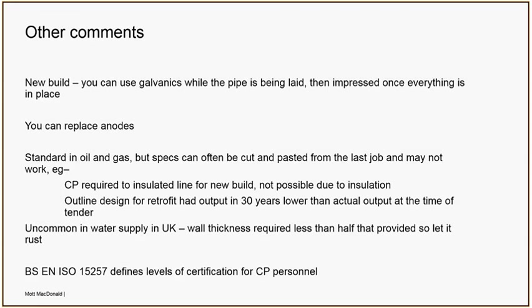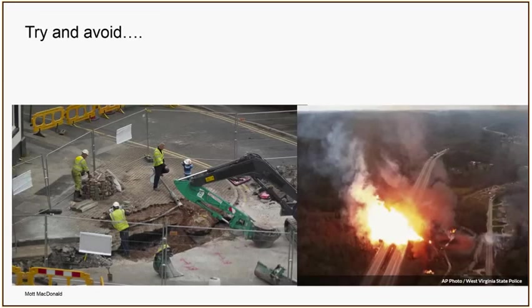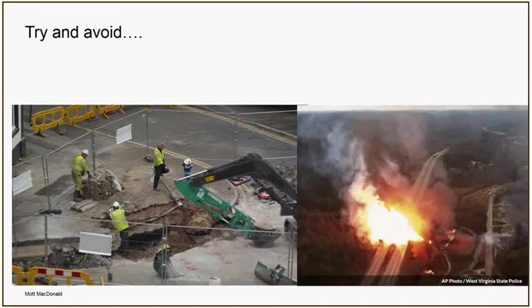That certification scheme is in place so you know that whoever's designing the system has the right qualifications and whoever's installing it has the right qualifications. What you're trying to avoid is the picture on the left — a common problem near where I work — where leaky pipes wash the ground away under the roads and occasionally big holes appear. On the right-hand side are the consequences of a failed oil and gas pipe: the two lines running through the picture are actually a three-lane highway. It's slightly more dramatic than a hole in the ground, but it can still be managed by simply stopping things from rusting. Thank you all for listening.